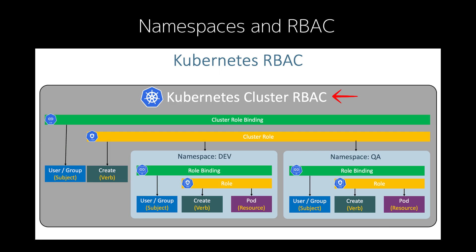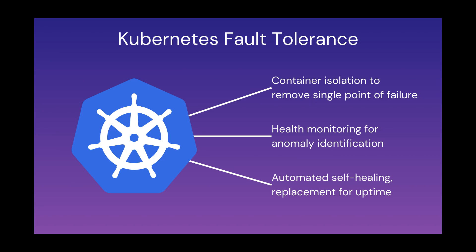With RBAC (Role-Based Access Control), you can manage permissions for users or services in your cluster — defining who can access what resources and perform which actions. One of the most powerful features of Kubernetes is its ability to scale and self-heal. Kubernetes can automatically scale your application based on demand: if traffic increases, it launches more pods; if traffic decreases, it scales down to save resources. If a pod fails or becomes unresponsive, Kubernetes detects this and replaces it, ensuring your application remains highly available and resilient.